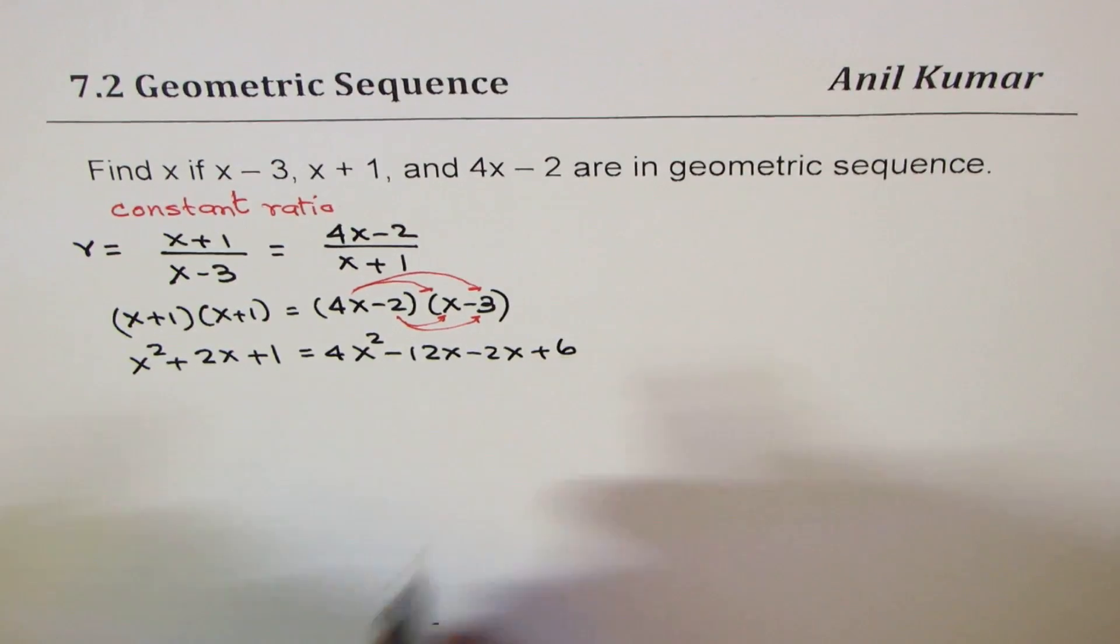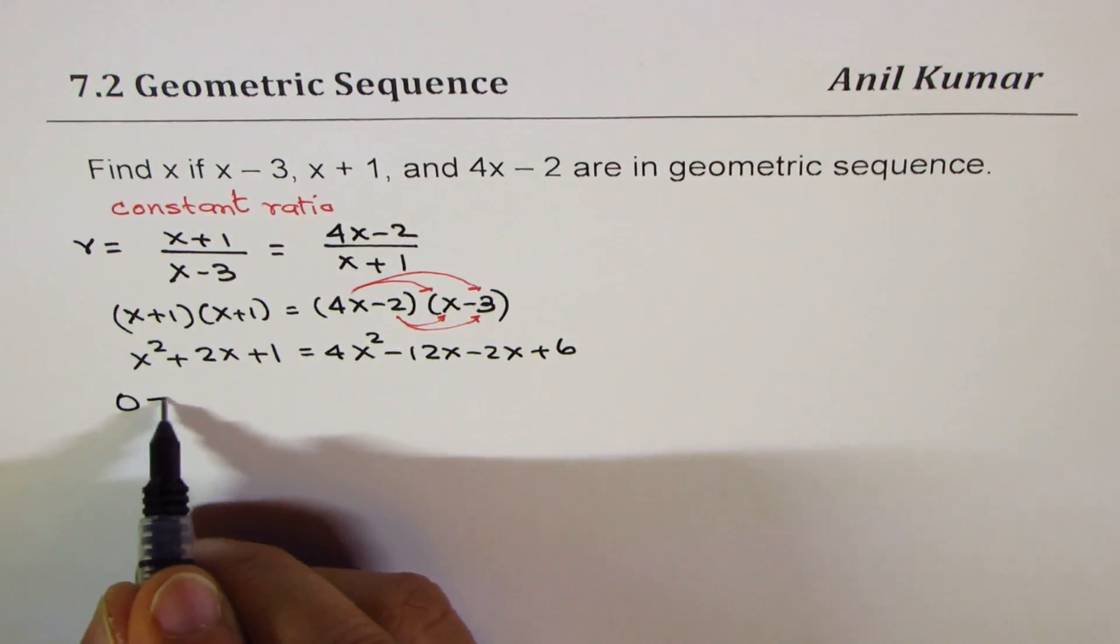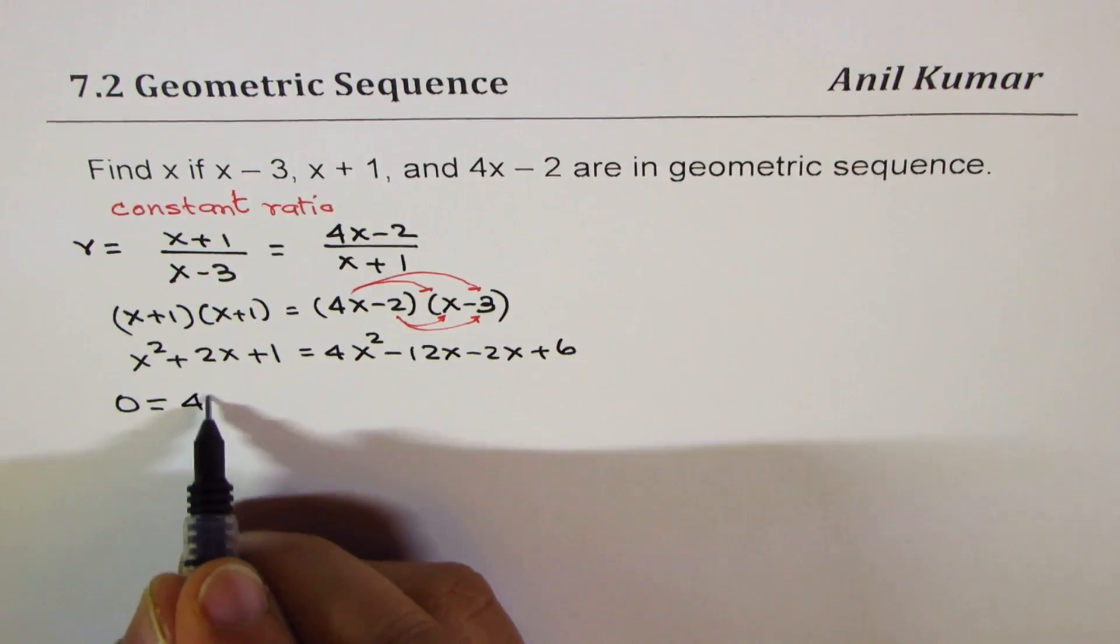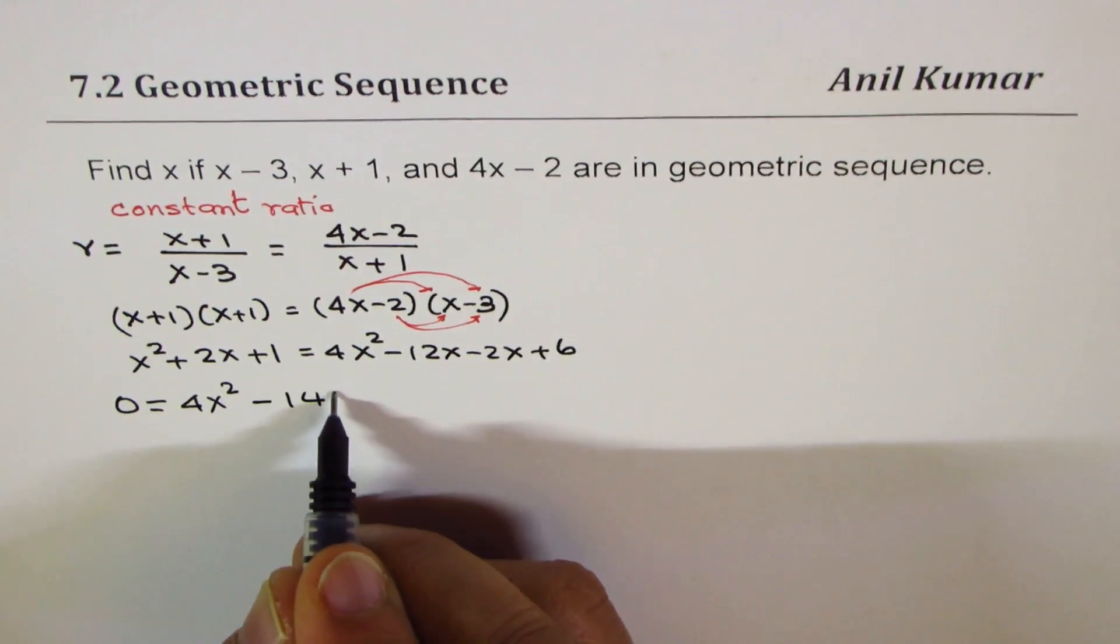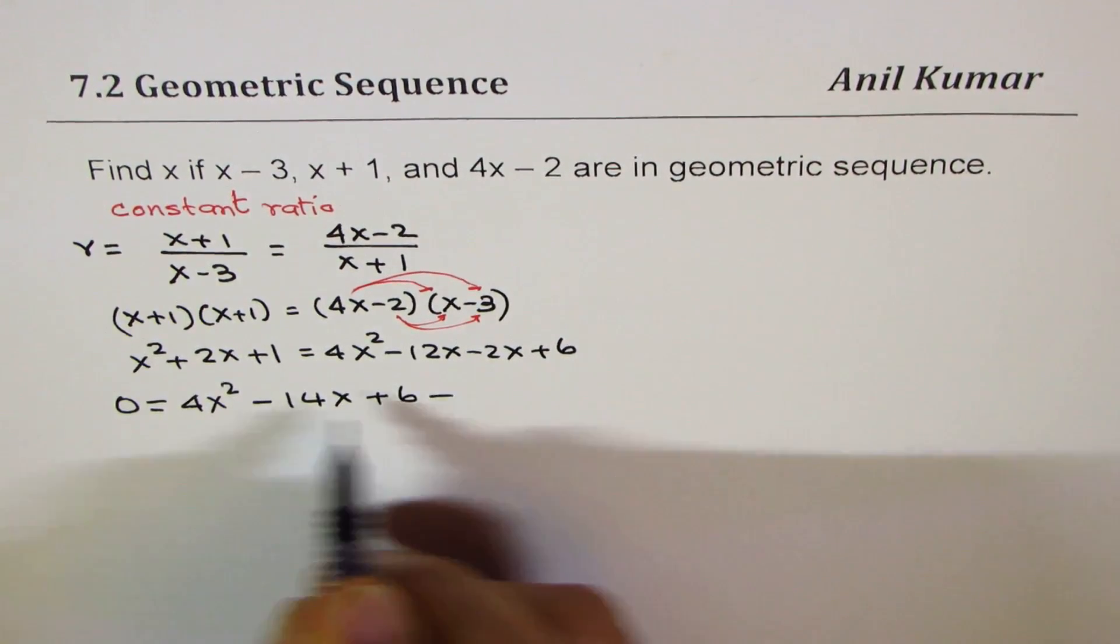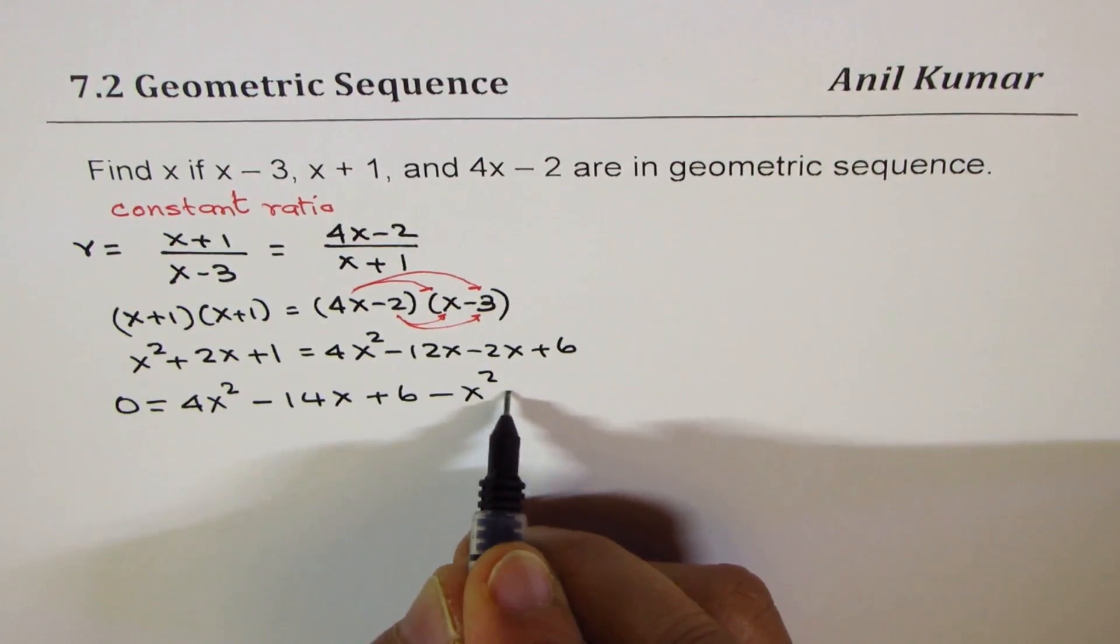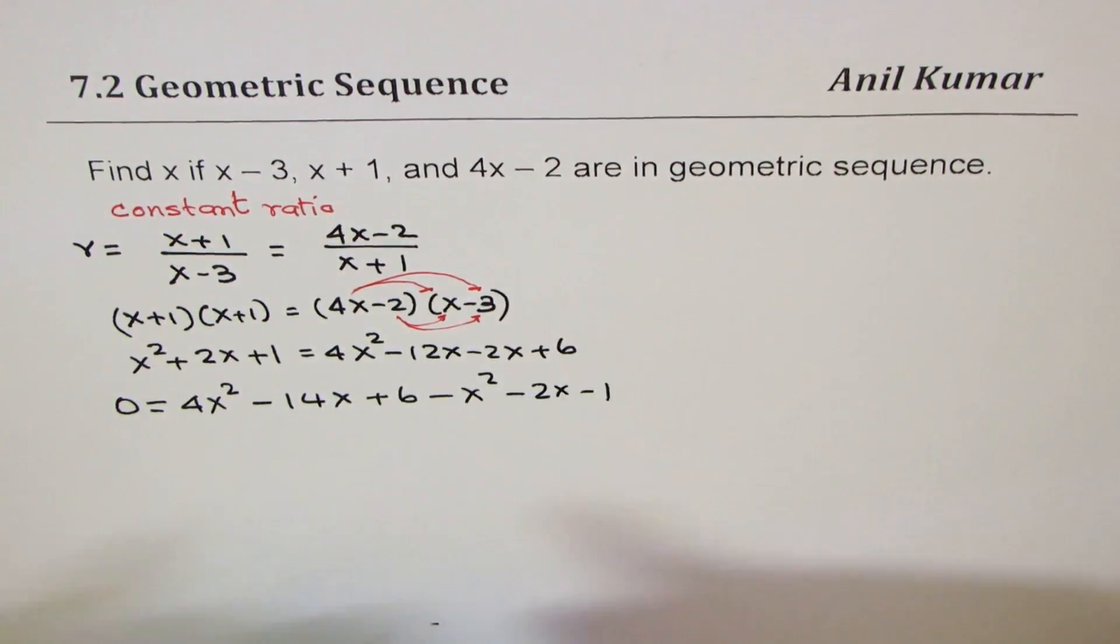Now bring all the terms together. So we have 0 = 4x² - 14x + 6, take away x², take away 2x, and take away 1.